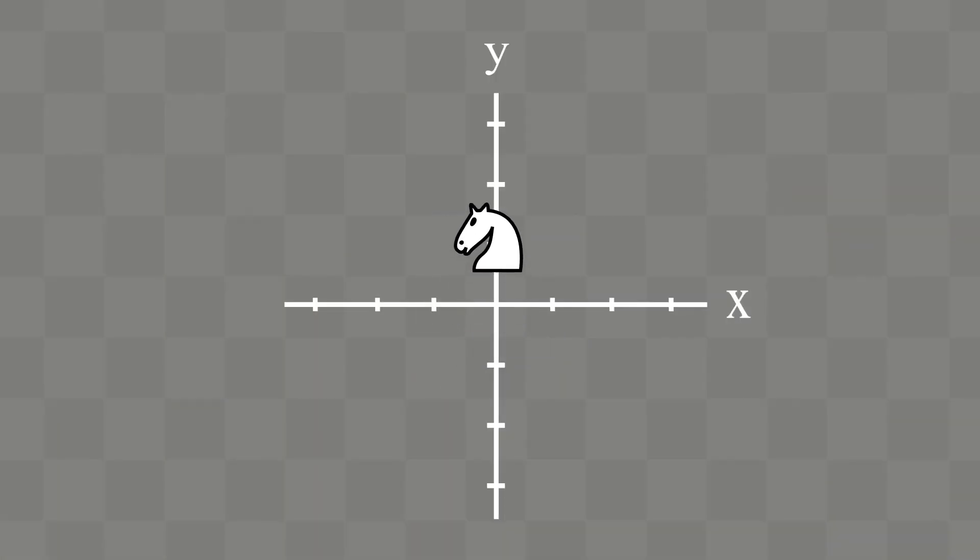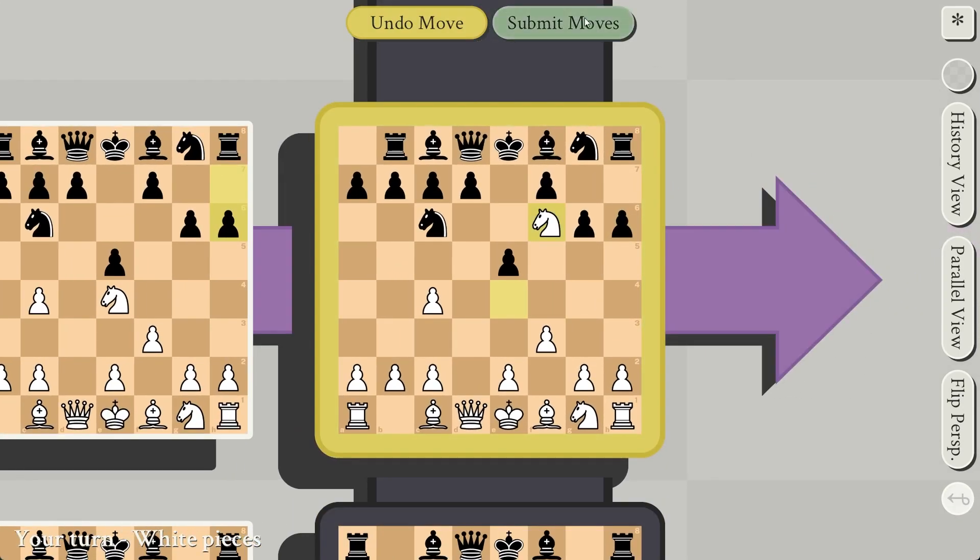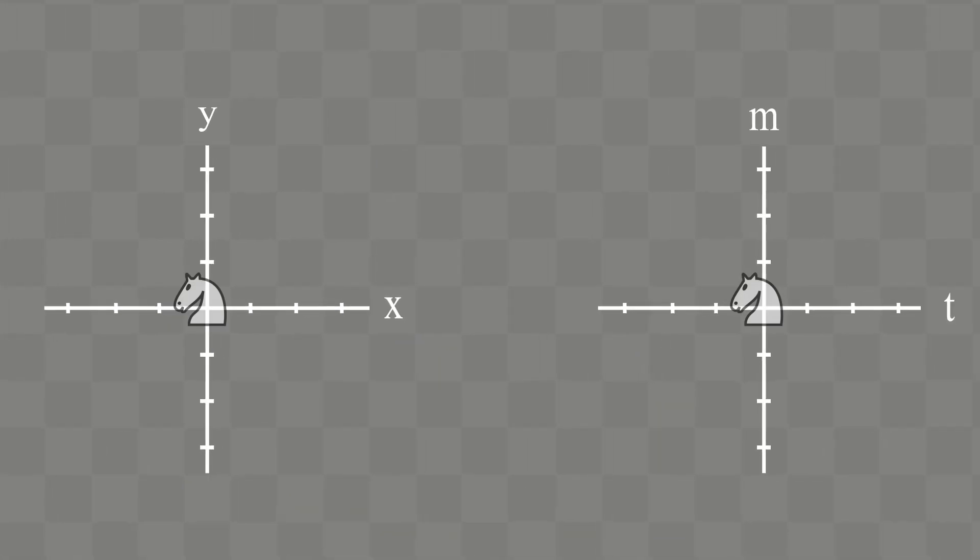The knight can move twice in one dimension and once in a different dimension. For example, it can move twice in Y and once in X, like this. However, with 5D chess, you have more than two options.